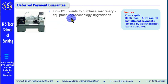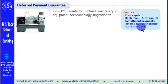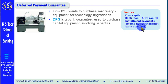And there could be another option, that is installment payments offered by the seller against bank guarantee. The seller is ready to get the payment in installments, but against bank guarantee. This type of guarantee is called Deferred Payment Guarantee.